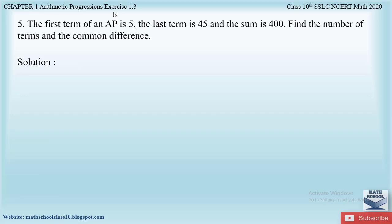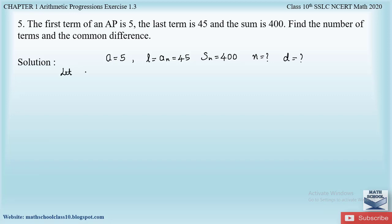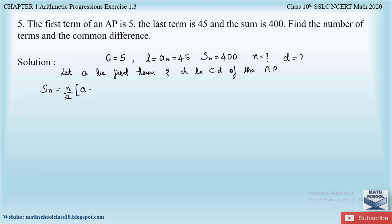Now let us solve question number five from exercise 1.3. It says: the first term of an AP is 5, the last term is 45, and the sum is 400. Find the number of terms and the common difference. Given: a = 5, last term l = 45, and Sn = 400.